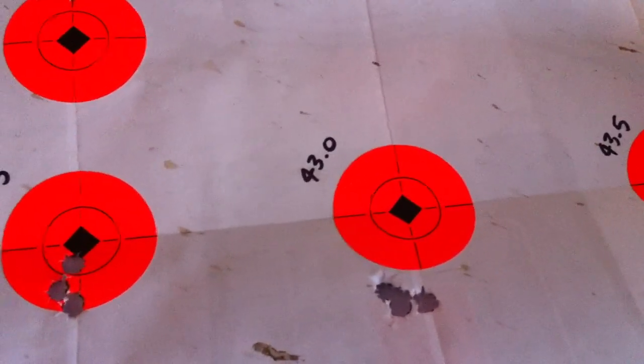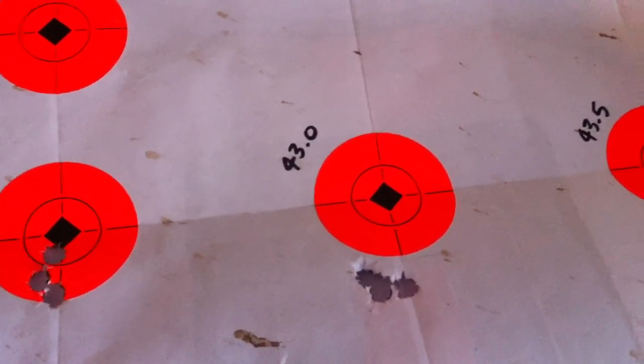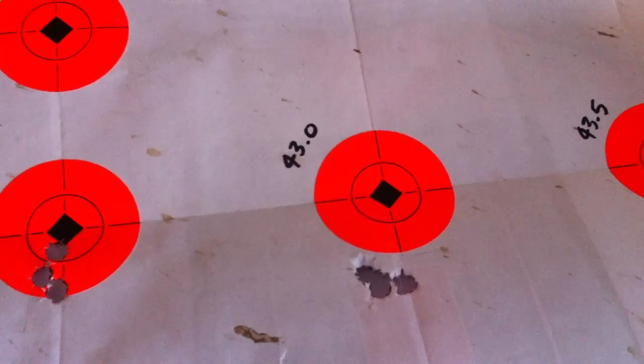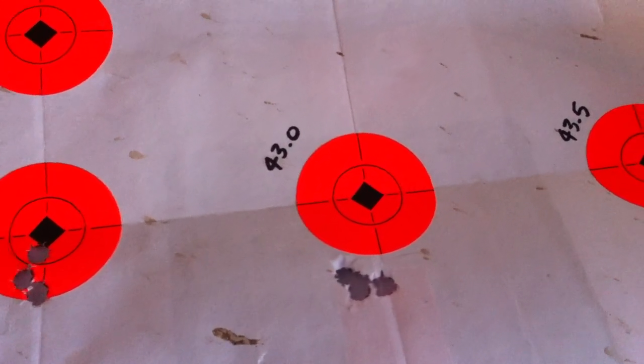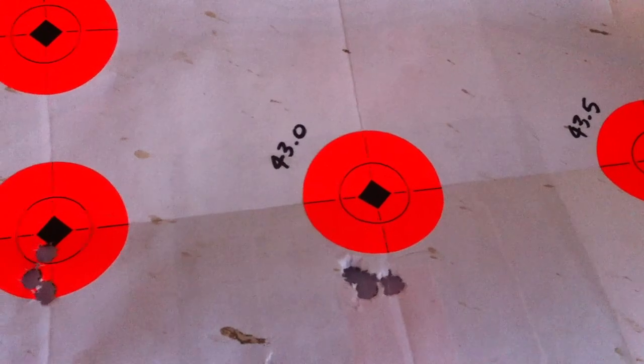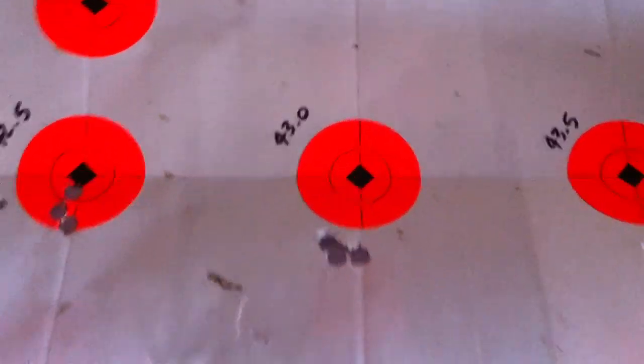This is all with Federal American Eagle brass, S&B large rifle primer, and no crimp on the neck. Happy shooting, YouTube. Bye-bye.